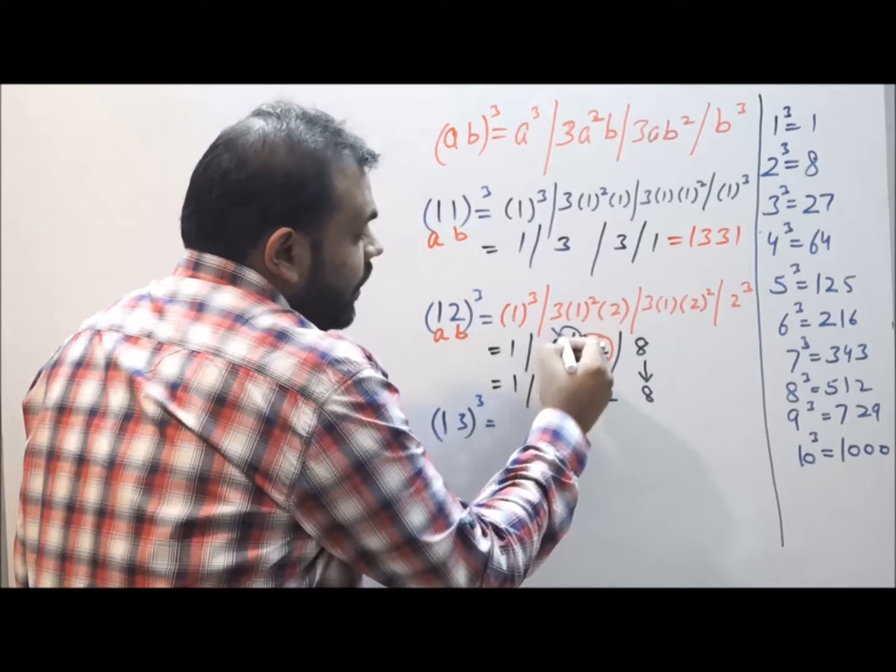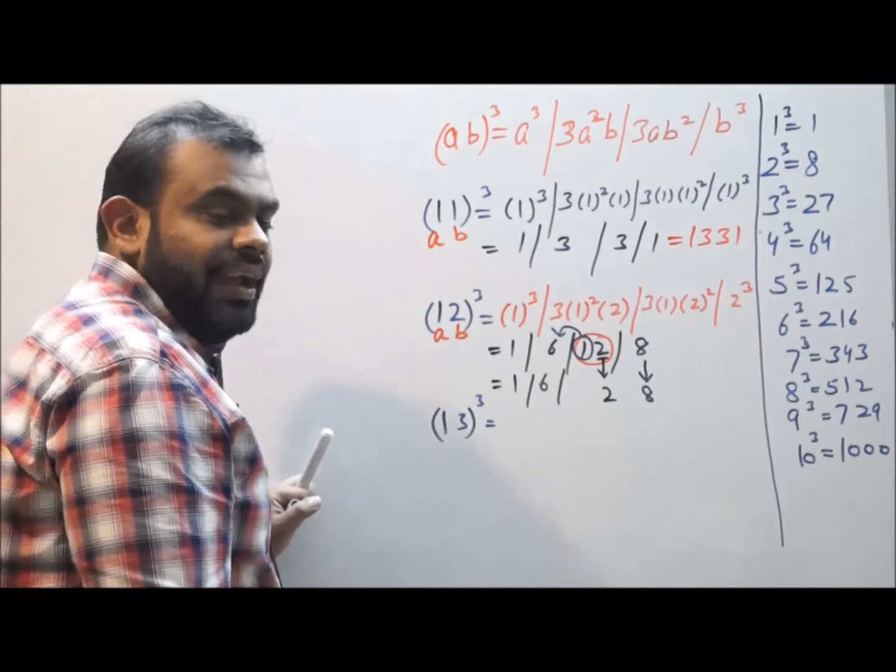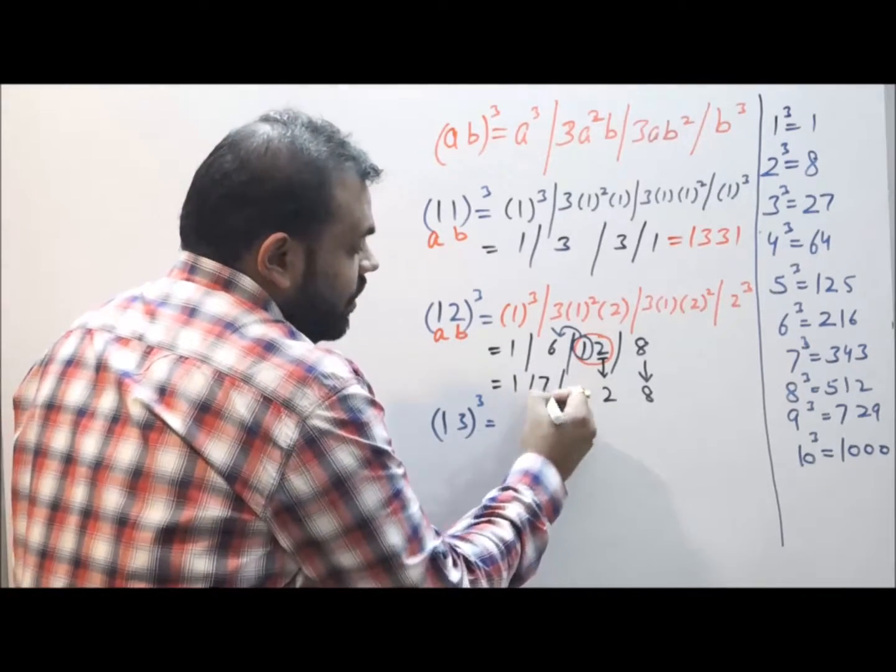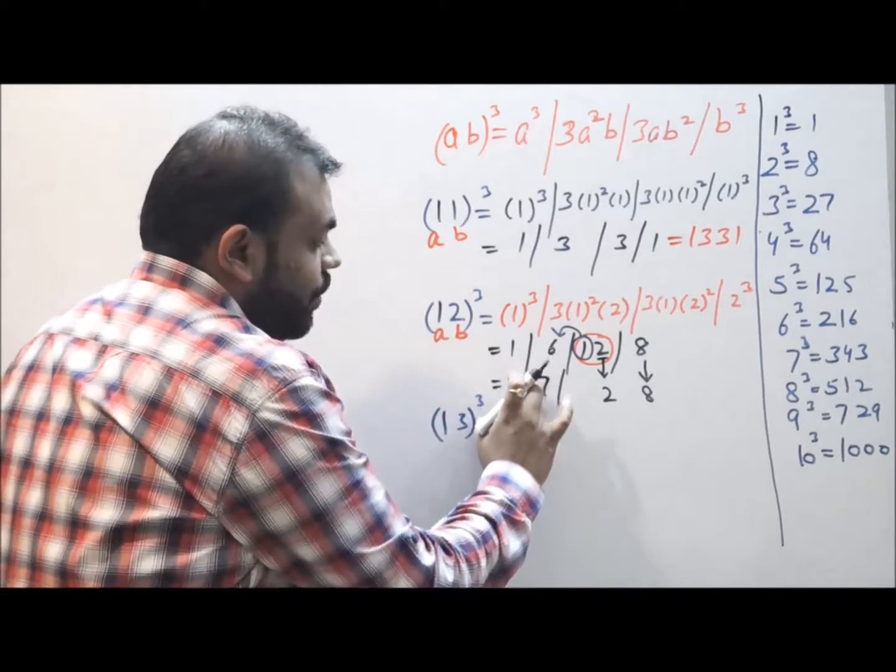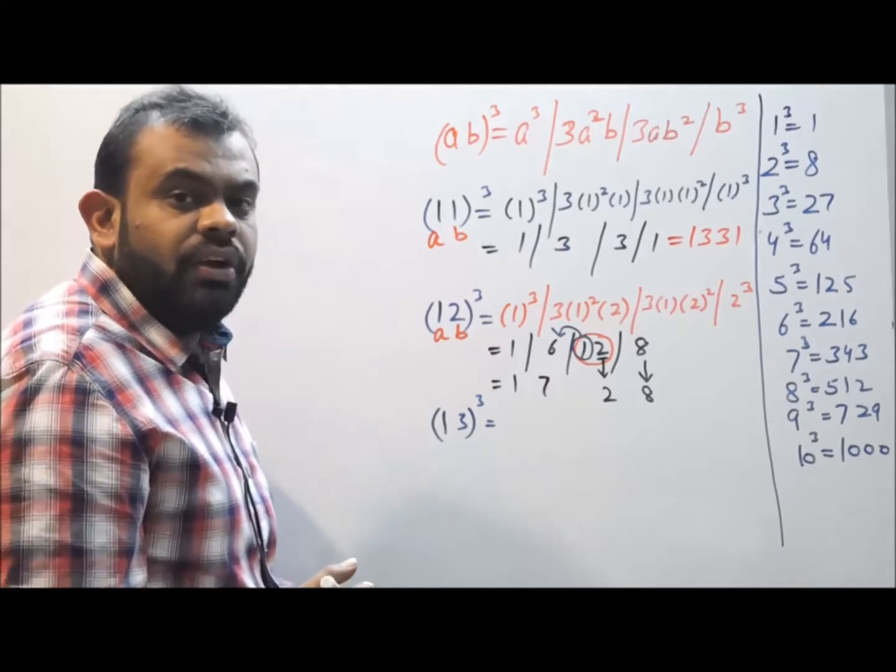So 1 + 6 becomes 7, and over here 1 was left. Removing the slashes from between, we can see that our answer is 1728.